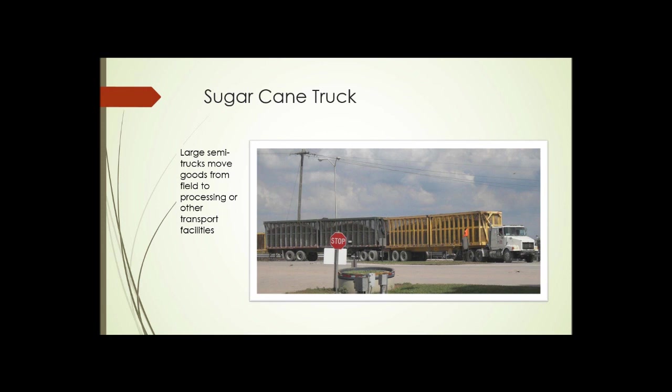This photograph shows an over-the-road truck — a semi. This one happens to be a multiple-trailer semi hauling sugar cane. We've all probably seen trucks like this hauling corn, soybeans, or other crops from a production area to a processing facility — where, in this case, sugar cane is turned into sugar — or to an intermediate transport facility like a grain elevator or port.